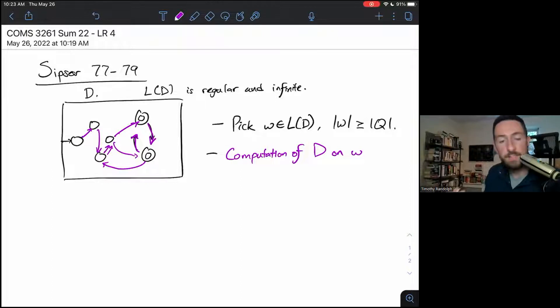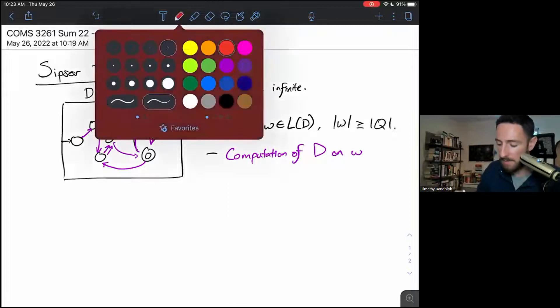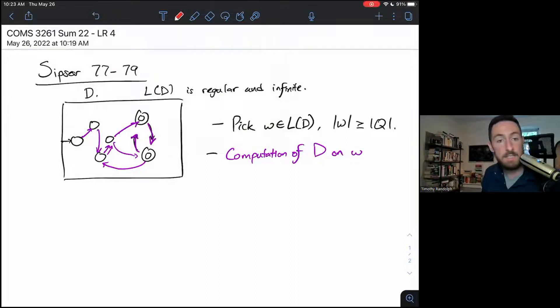Now, here's the important thing to realize. That computation takes at least Q steps, right? One step for the length of W, which means we've got to touch at least Q plus one states. And if we touch Q plus one states, we have to have touched some state twice. In particular, here, there's actually a couple. There has to be at least one loop.